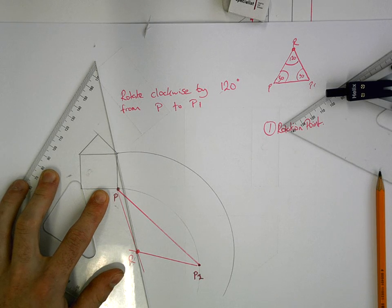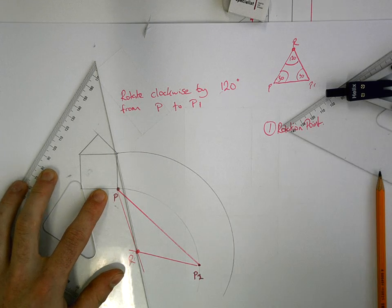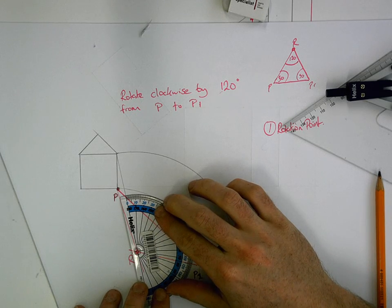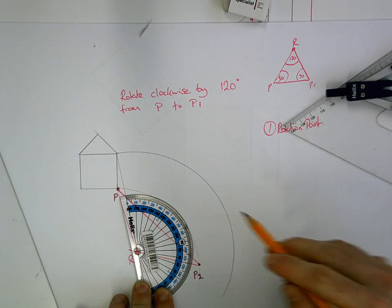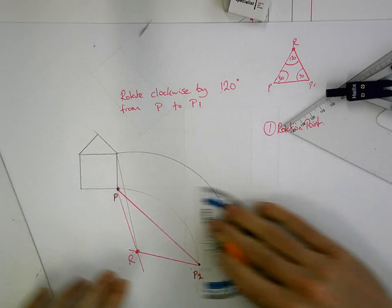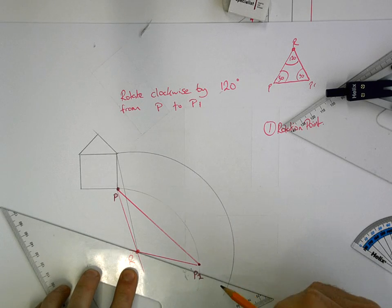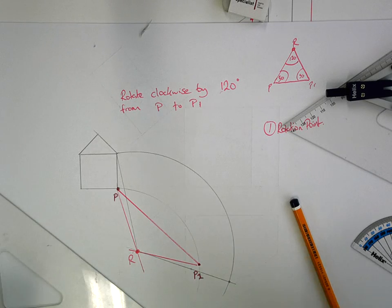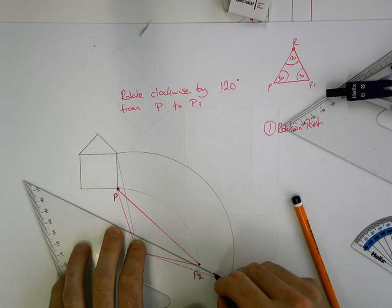Alright? So we need our protractor for that. The centre of the protractor goes on point R. Line up our zero. Measure 120. And then draw the line coming out. Intersects it here. So that's the side wall of the house.